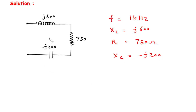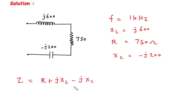Now first of all we can find the total impedance. As we know, total impedance is equal to R plus JXL minus JXC. The value of resistance R is 750. As we can see, this is the rectangular form.